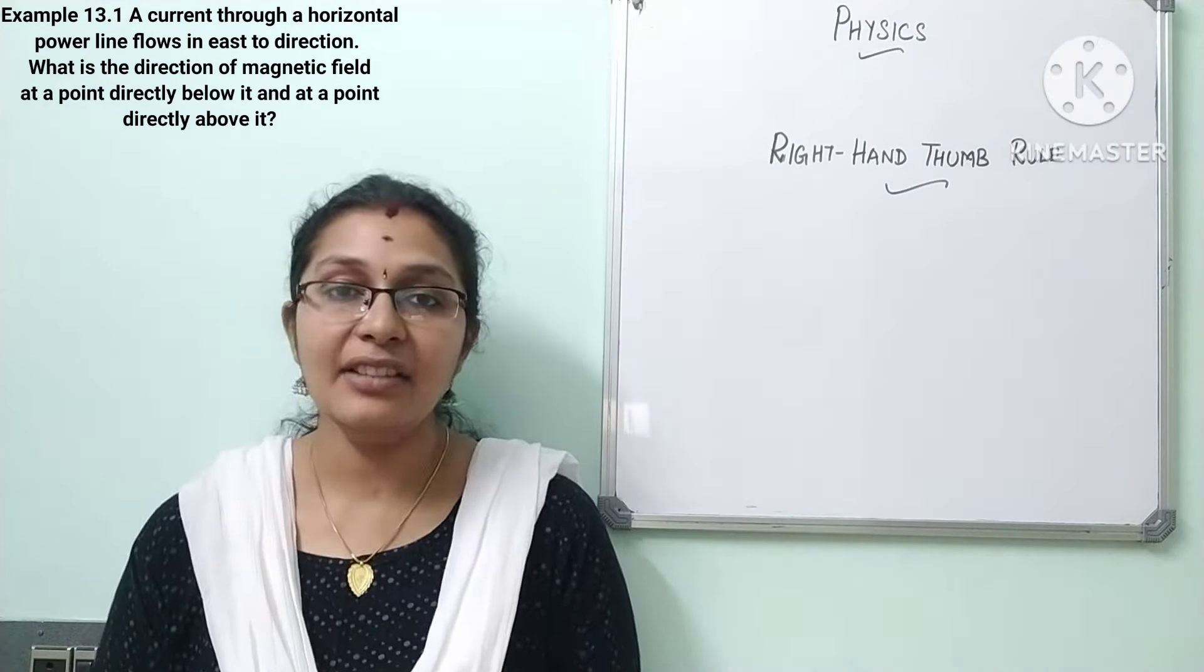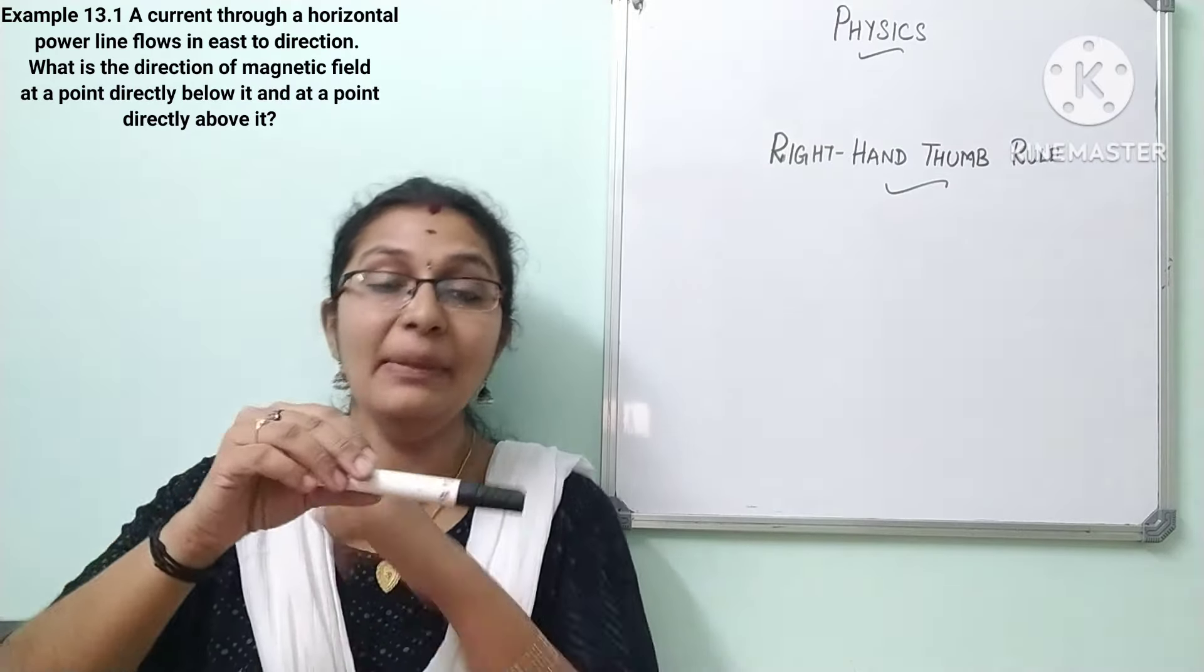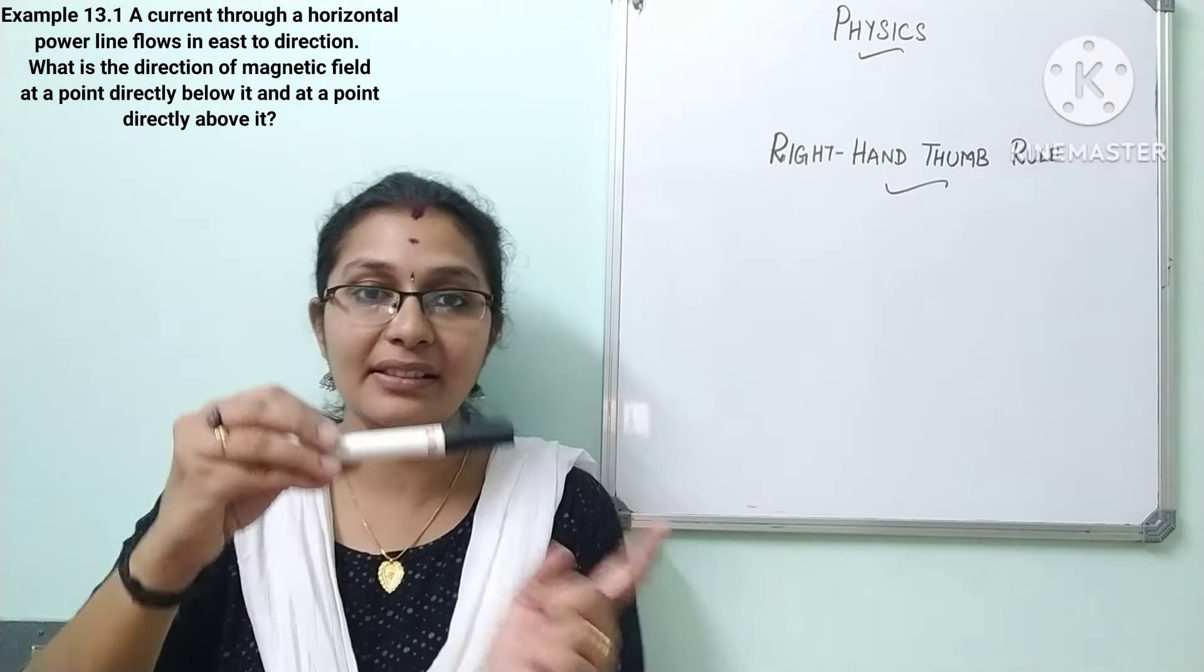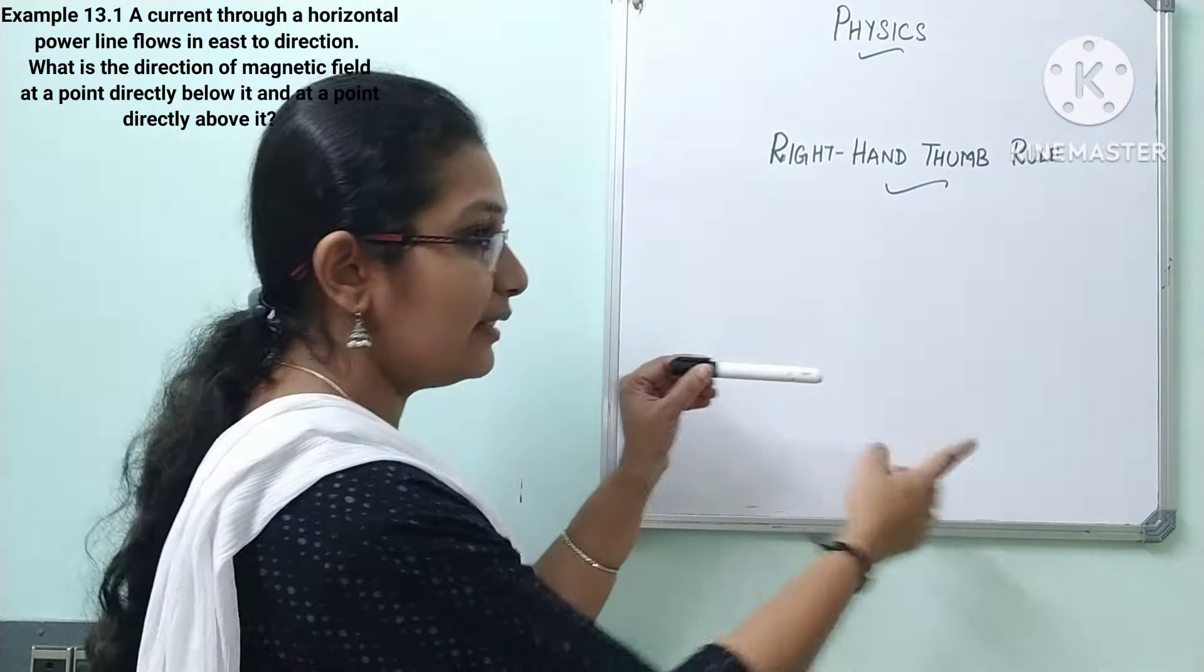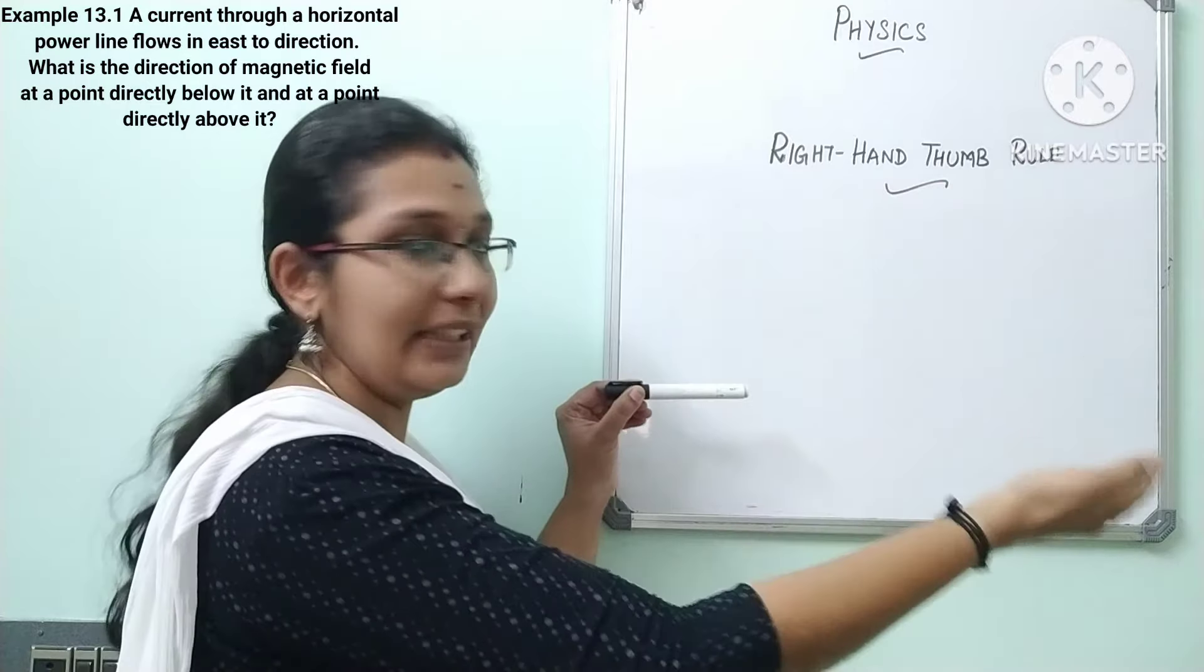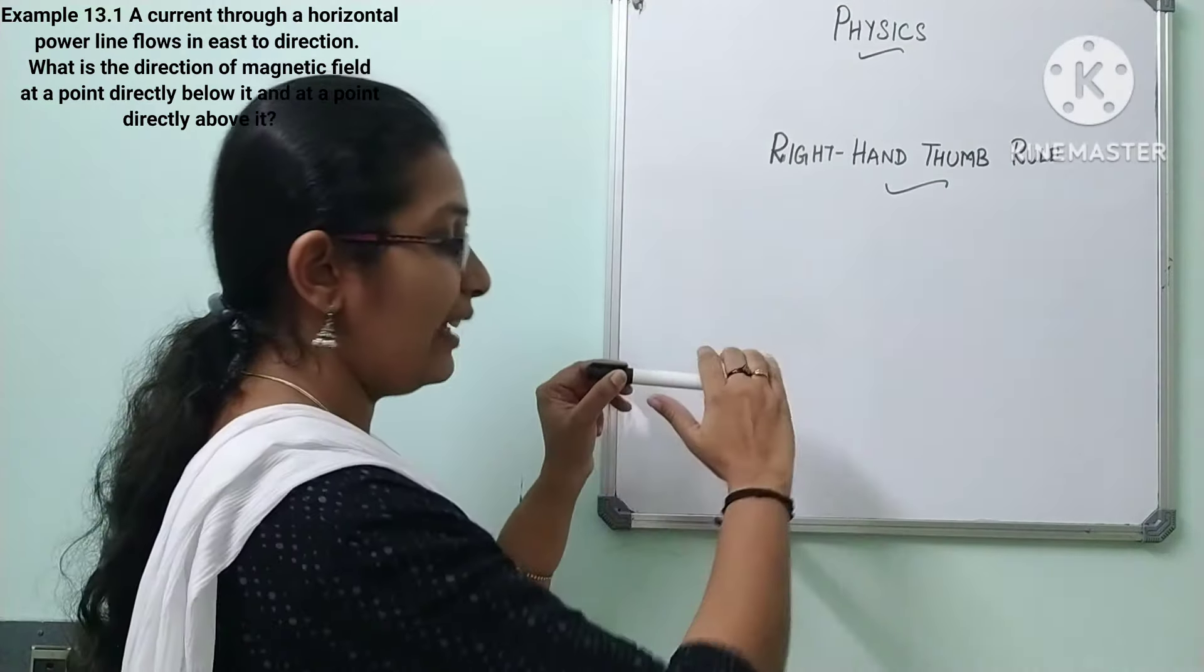So they are telling us we have a current carrying conductor and the direction of current is flowing from east to west. For me it is like this, for you it will be from like this. So I will show in this direction itself. So this is my east, my right hand side is my east, and my left hand side is my west. So from east to west it is flowing.